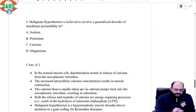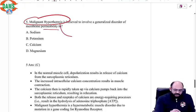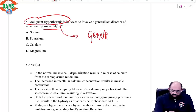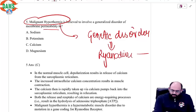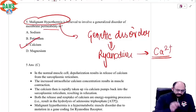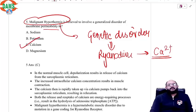Malignant hyperthermia is believed to be a generalized disorder of permeability. Malignant hyperthermia is a genetic disorder that affects the ryanodine receptor, and we know the ryanodine receptor is involved in calcium transmission. So the correct answer would be calcium.